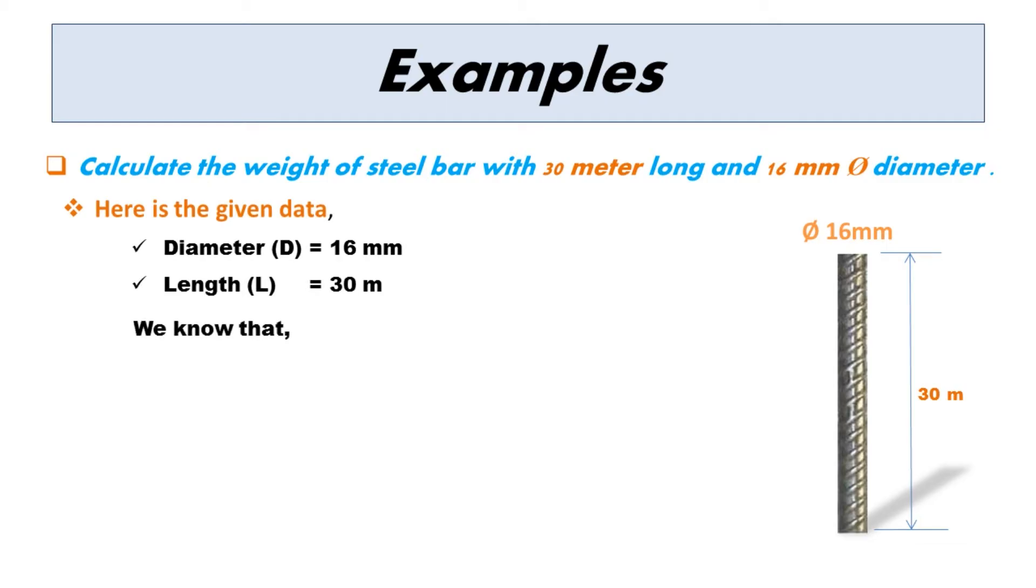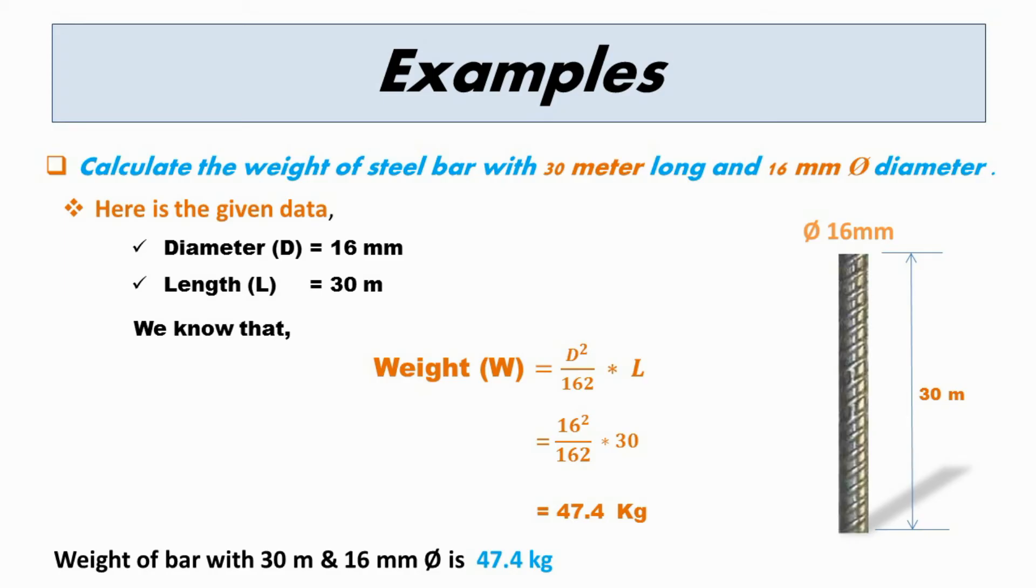And we know that. So, the weight of bar with 30m and 16mm diameter is 47.4kg.